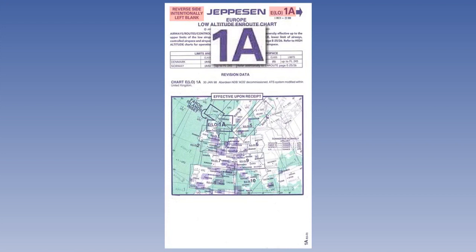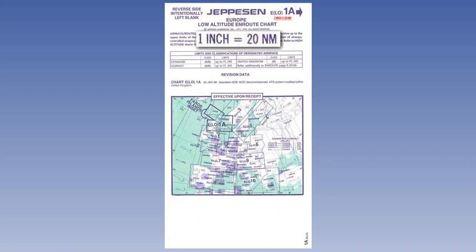This chart is only printed on one side, as we can see from the note in the top left-hand corner. Below the chart number is the scale. On this chart, it is 1 inch to 20 nautical miles, which approximates to 1 in about 1.5 million.